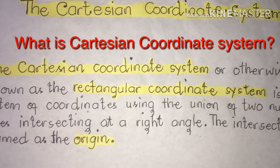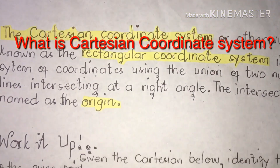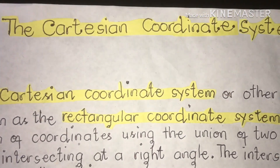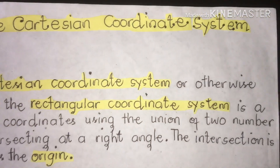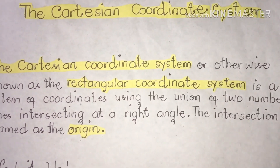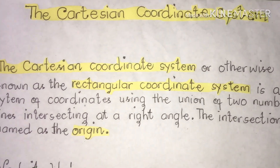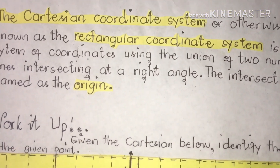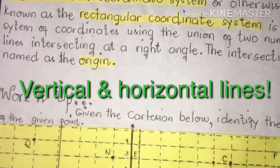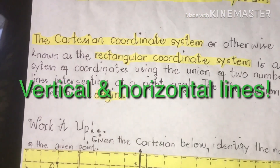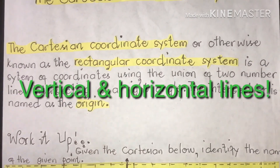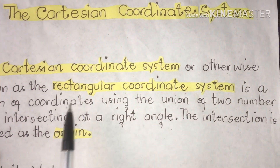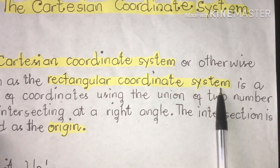Cartesian planes are formed by two perpendicular number lines that intersect. Simply put, the Cartesian plane is really just two number lines — one vertical and one horizontal — where both form right angles with one another. Another definition of the Cartesian coordinate system is that it is otherwise known as the rectangular coordinate system.